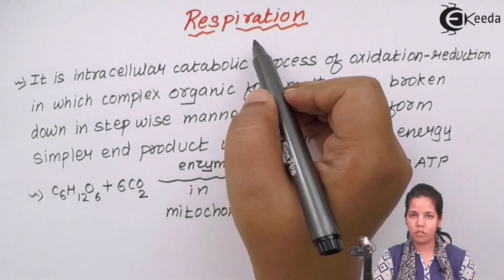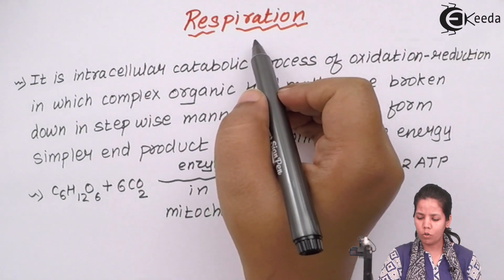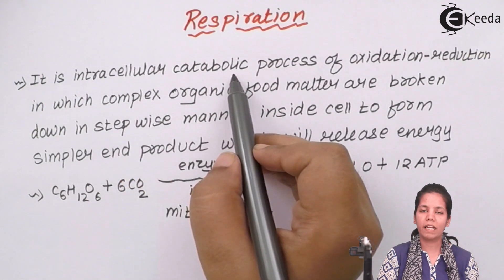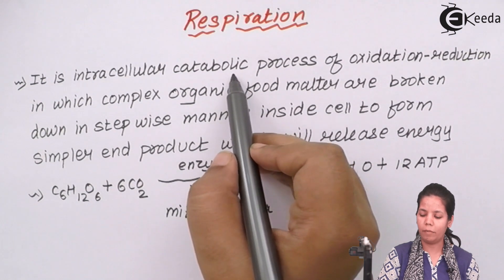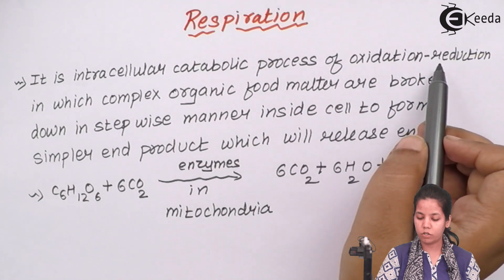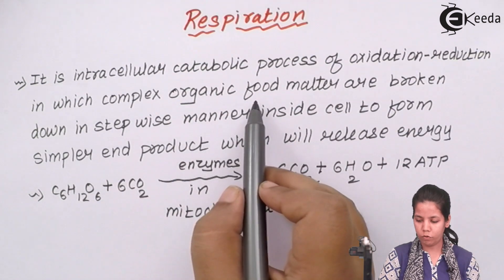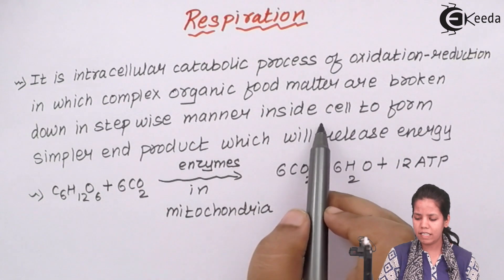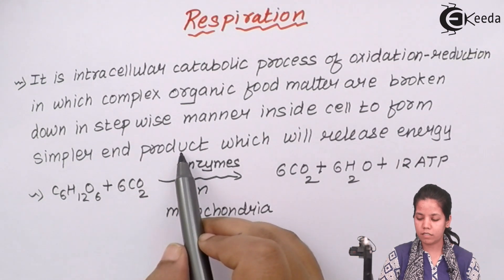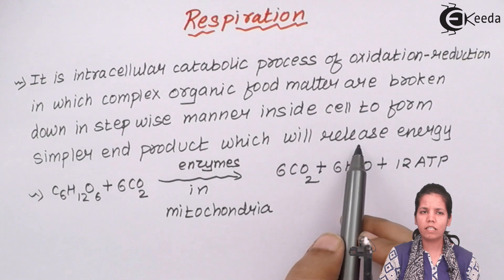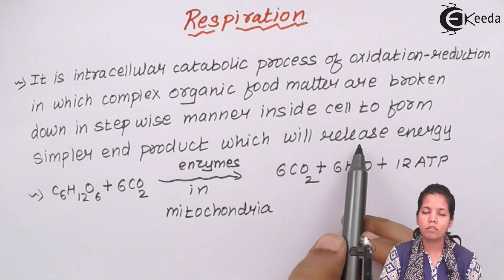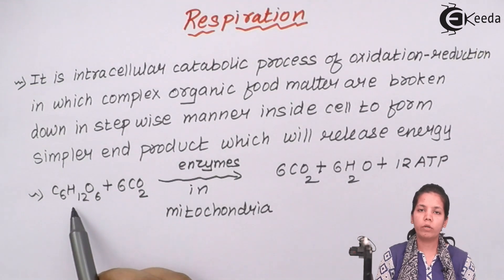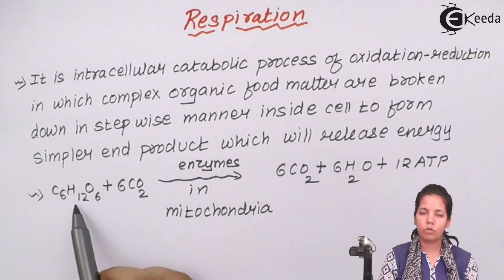The definition of respiration in plants goes as follows: it is an intracellular catabolic process — when I say catabolism it means a breakdown or subtraction process — involving oxidation and reduction, in which complex organic food matters are broken down in a stepwise manner inside a cell to form simpler end products and release energy. So basically it is a breakdown process to release energy. C6H12O6, which is glucose, is formed during the process of photosynthesis as a food source inside plants.